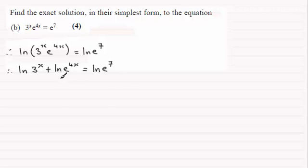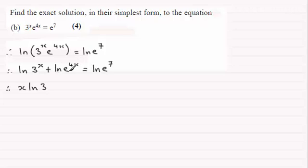At this point, what I could do is bring the powers out using the power rule for logs. In other words, this term becomes x times the natural log of 3. This one will be 4x times the natural log of e — but remember the natural log of e is 1, so this is just plus 4x. And for this one, it will be 7 times the natural log of e, or 7 times 1 — in other words, 7.